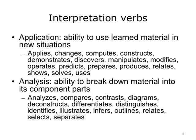The following verbs can be used to describe observable interpretation skills. These verbs describe application — the ability to use learned material in new situations: applies, changes, computes, constructs, demonstrates, discovers, manipulates, modifies, operates, predicts, prepares, produces, relates, shows, solves, uses. For analysis — the ability to break down material into its component parts: analyzes, compares, contrasts, diagrams, deconstructs, differentiates, distinguishes, identifies, illustrates, infers, outlines, relates, selects, separates.